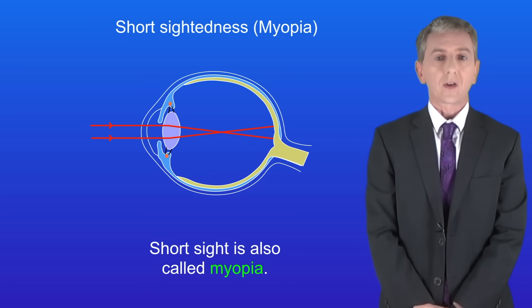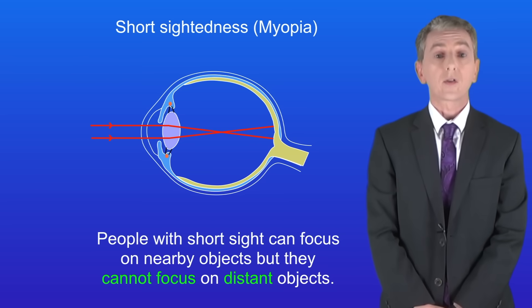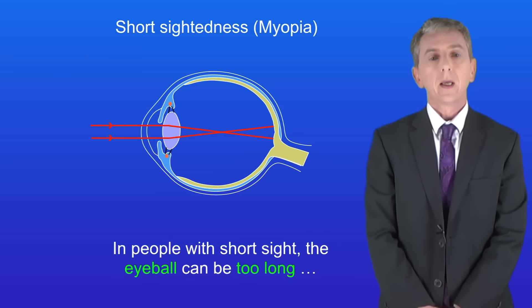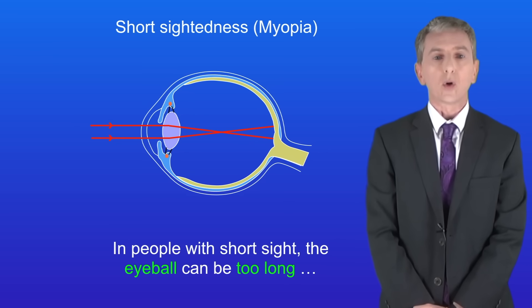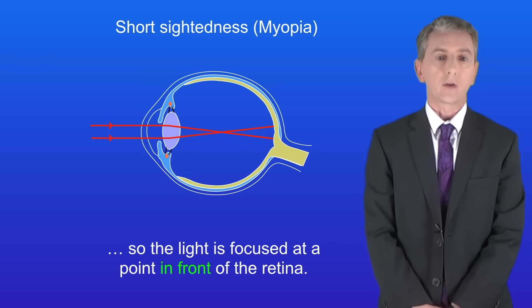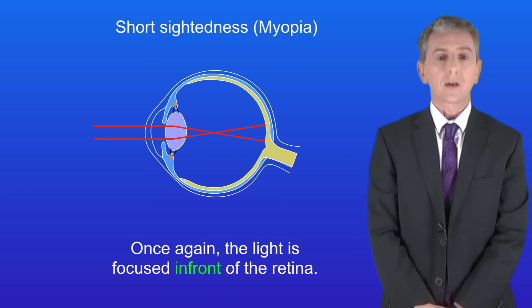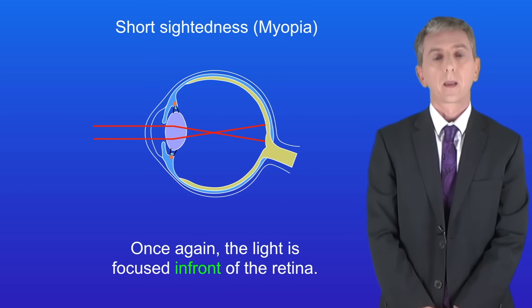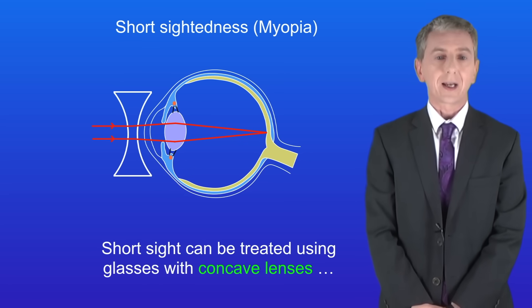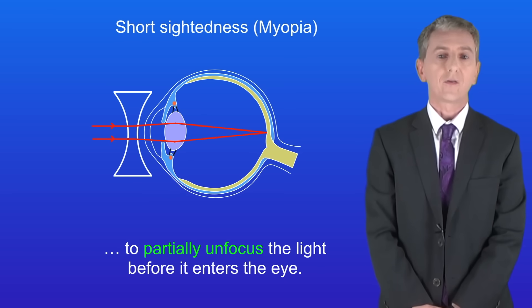Short sight is also called myopia. People with short sight can focus on nearby objects but they cannot focus on distant objects. In people with short sight, the eyeball can be too long so the light is focused at a point in front of the retina. Short sight can also be caused when the lens is too thick, and once again the light is focused in front of the retina. Short sight can be treated using glasses with concave lenses to partially unfocus the light before it enters the eye.